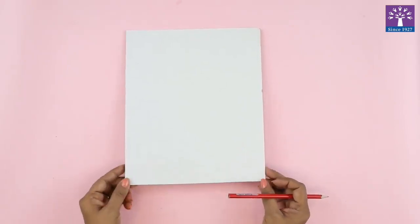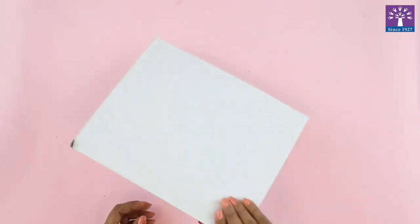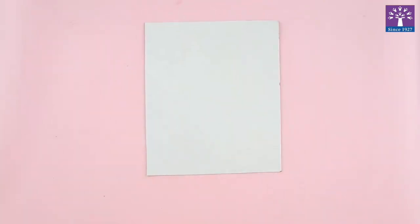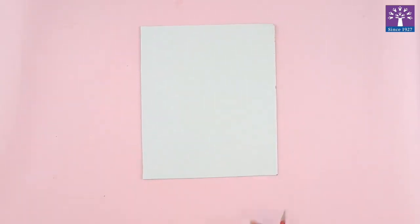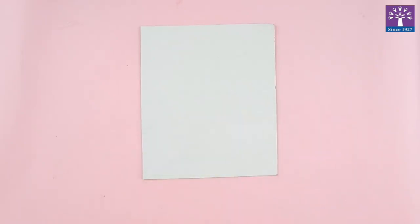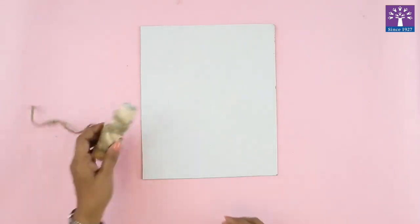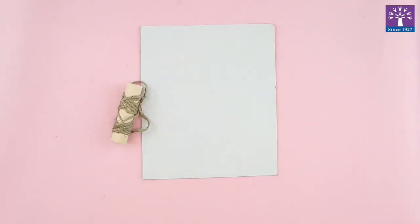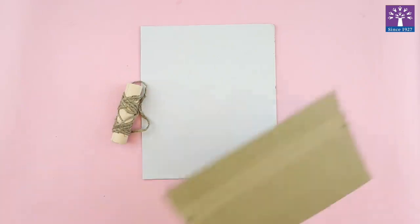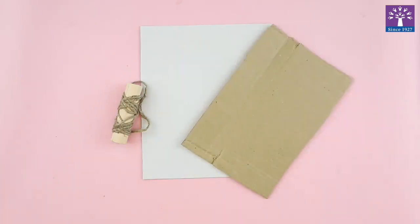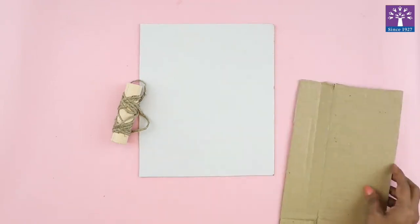We will need a flat surface or something which is flat like a mount board or a cardboard. Now to create a printing plate or a Collagraph plate, you will need to stick different kinds of material in a design or an abstract way. So you can use some jute string, rough cardboard pieces, some shells or some buttons — anything that you have lying in your home — to create a design on your Collagraph plate.